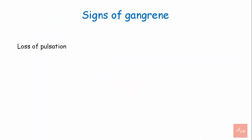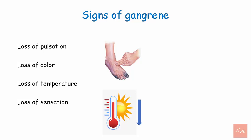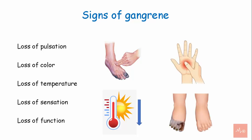Signs of gangrene include loss of pulsation, loss of color, loss of temperature, loss of sensation, and loss of function.